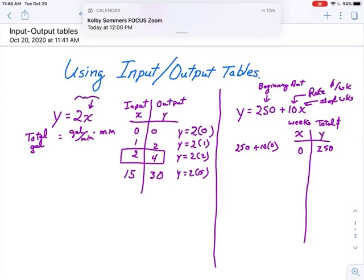So, you start small. That way you can see what's happening. And then, choose numbers that are consistently going up by the same amount. That way you can see what's happening. So, at the end of one week, it would be 250 plus 10 times 1. So, that's 250 plus 10. So, that's 260.